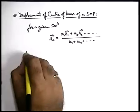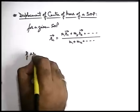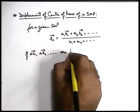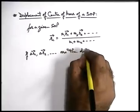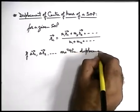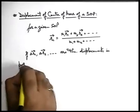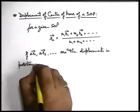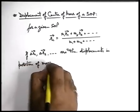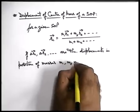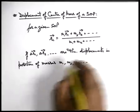Here, if delta r-one, delta r-two, and so on are the displacements in position of masses m-one, m-two, m-three and so on, then